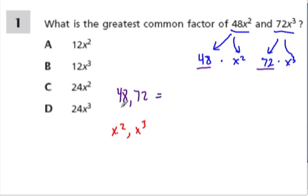So here, what goes into 48 and 72? They give us two options, 12 and 24. Well, 12 does go into both numbers but so does 24, right? 24 times 3 is 72, and 24 times 2 is 48. So 24 is the greatest common factor.